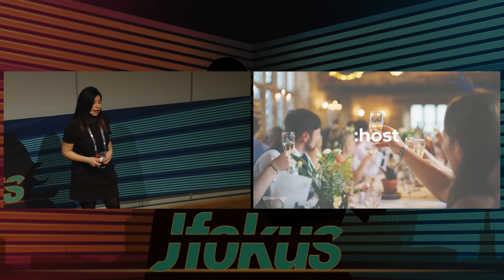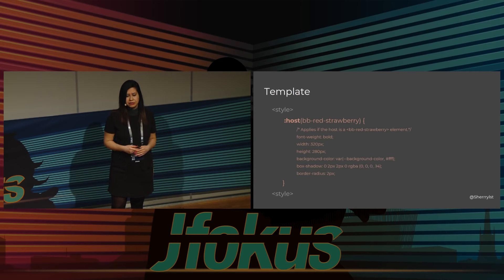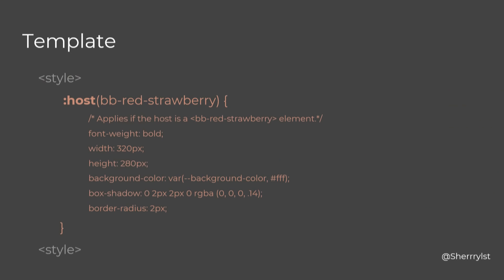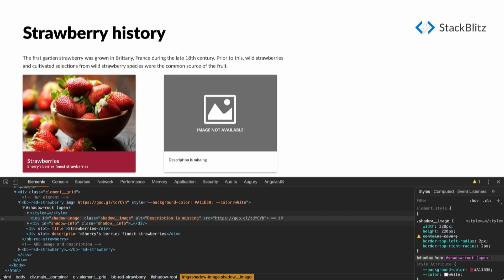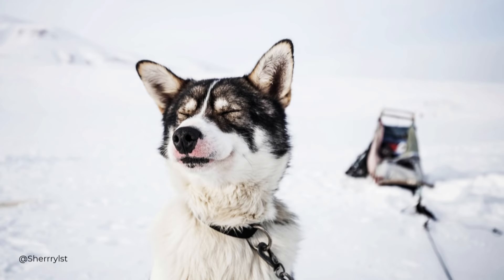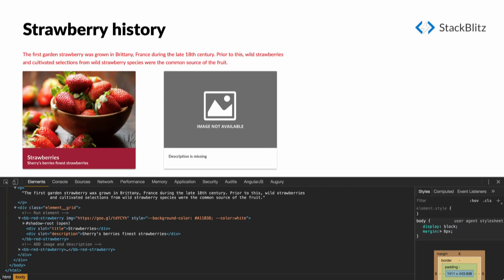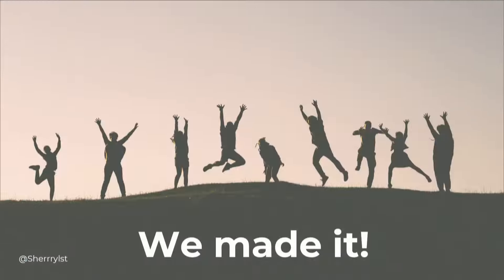The other concept is host — you're probably familiar with it in Angular. What we do here is apply CSS directly to our custom element, so instead of wrapping it in an extra div just for styling purposes we can remove that extra div. We applied all of these things together and now we have a fully functional web component, and our doggy looks great — he is so happy, because the style encapsulation works.